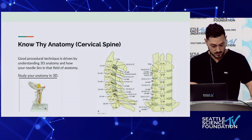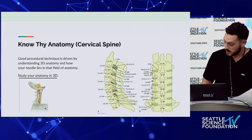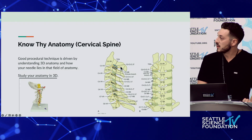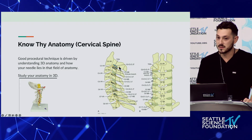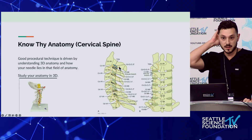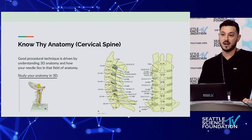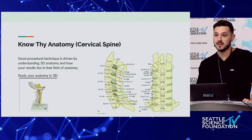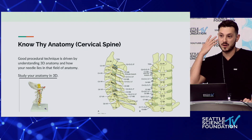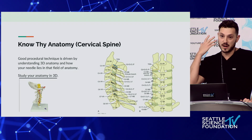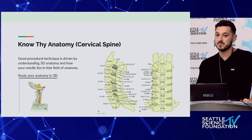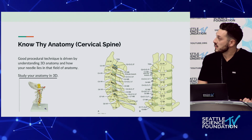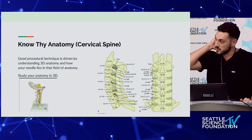When looking at the lateral view, the third occipital nerve - there's a pointer up here - is very commonly a nerve you're going to ablate when treating cervicogenic headache, which is pain radiating up into the occiput. This is super common. You'll commonly have patients who are getting treated for migraines, on five different migraine medications, and it just turns out they have either third occipital neuralgia or occipital neuralgia. It's a huge service to patients when they're on polypharmacy being treated for what's not really a migraine.